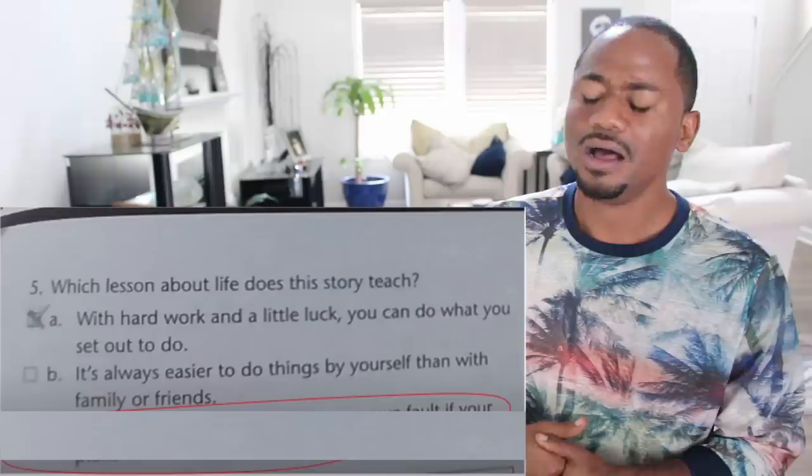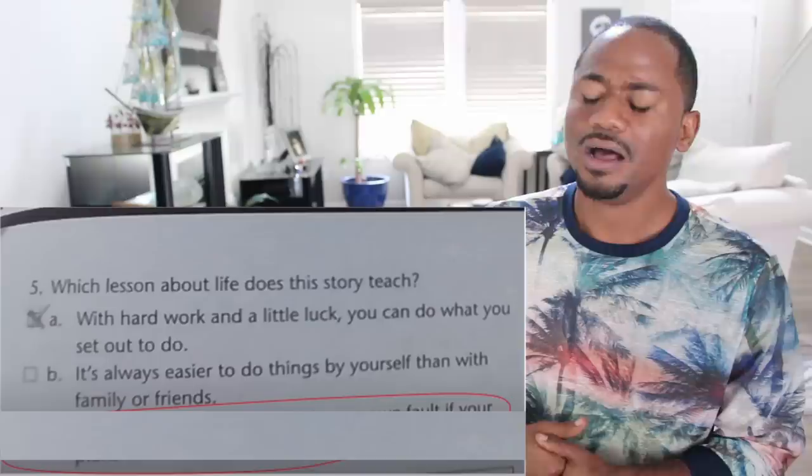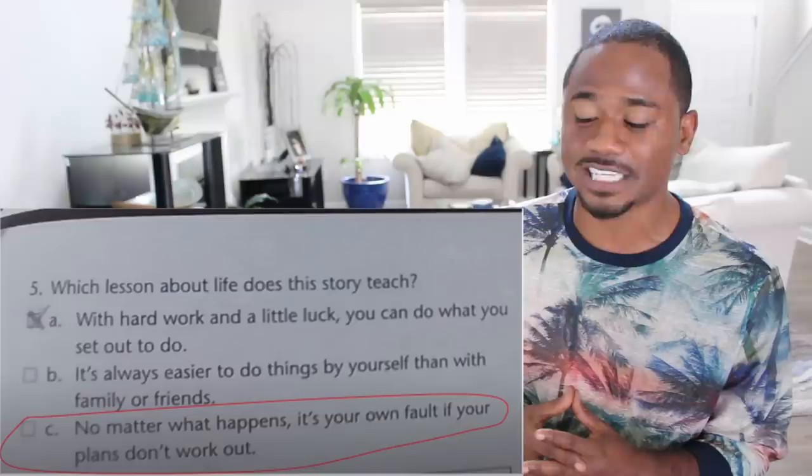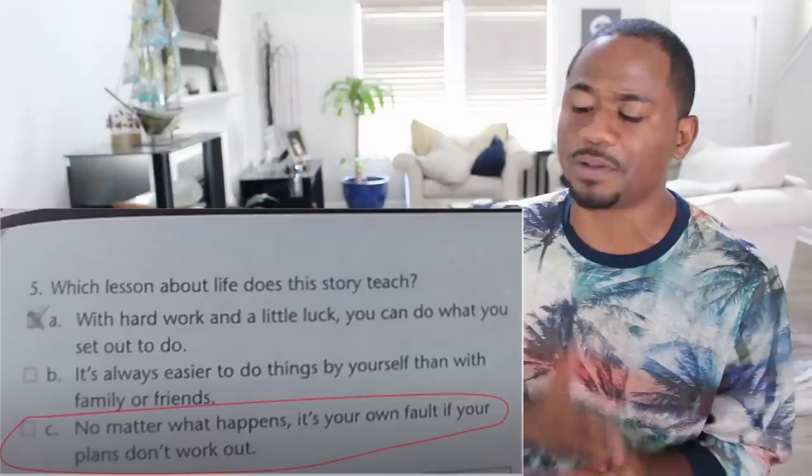Which lesson about life does this story teach? The kid marked A: 'With hard work and a little luck you can do what you set out to do.' The teacher said no, it's actually C: 'No matter what happens, it's your own fault if your plans don't work out.' Can I get a little inspiration up in here? You just shot me down — you're saying if my plans don't work it's all my fault?